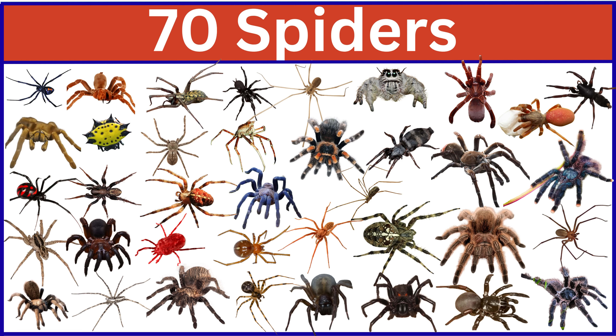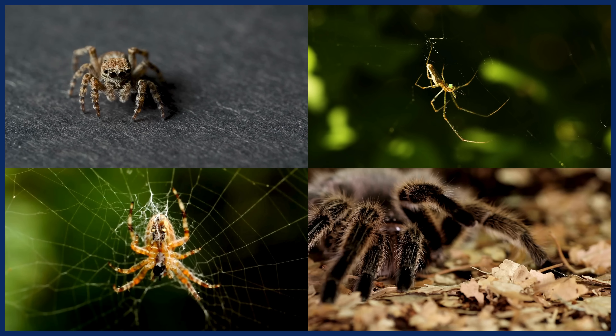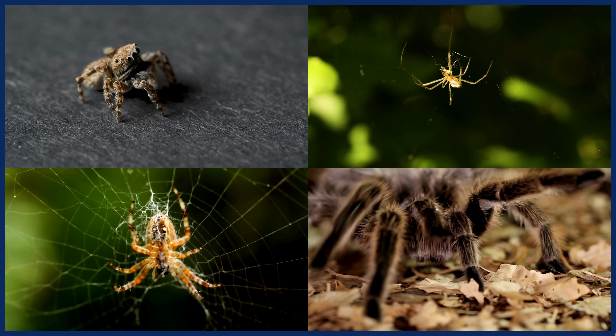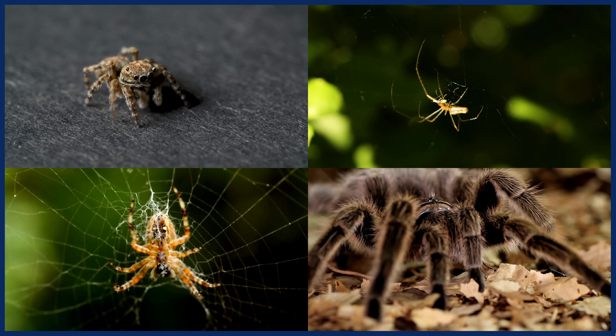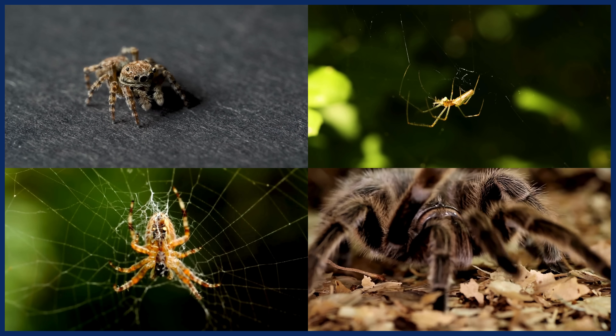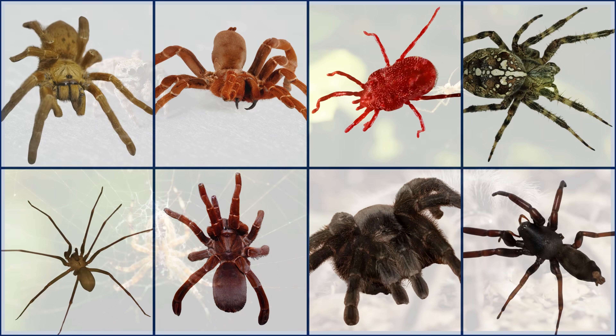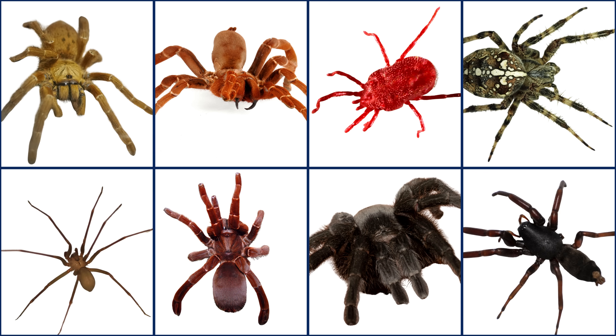Spiders are small animals with eight legs that live in many places around the world. There are many kinds of spiders, like tarantulas, wolf spiders, and orb weavers. Let's learn 70 spider names in this video.